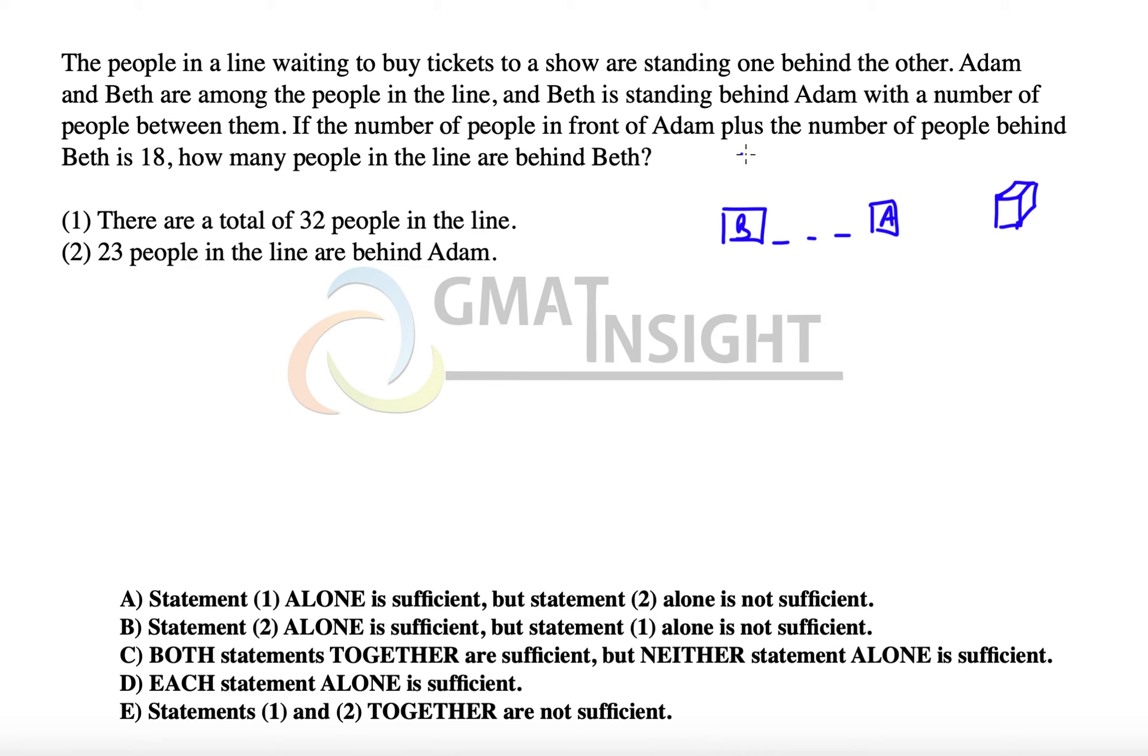If the number of people in front of Adam, let's assume it is x, plus the number of people behind Beth, let's call it y, is 18. That means now we know the first information is x plus y is equal to 18.